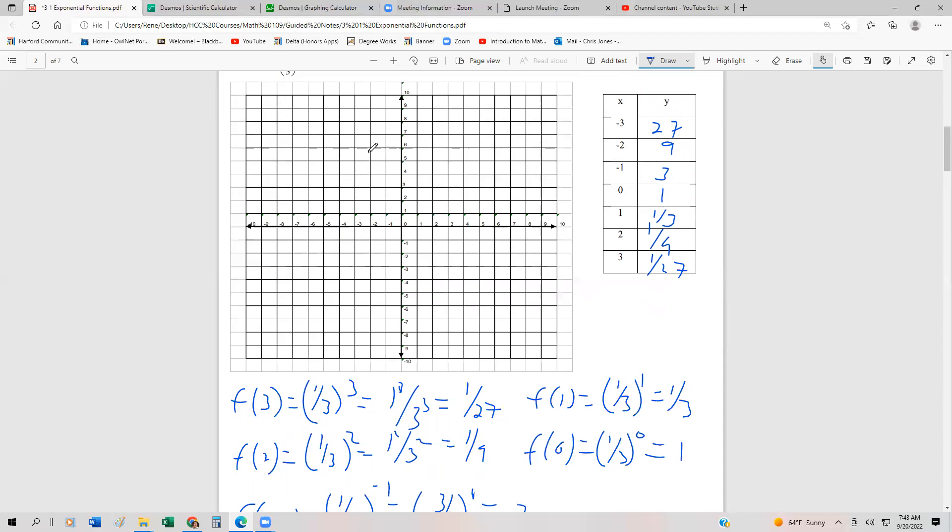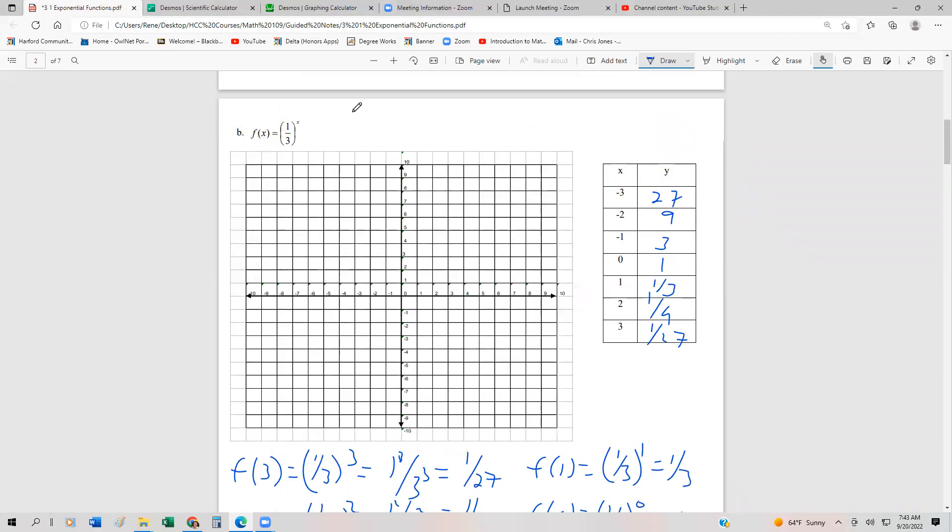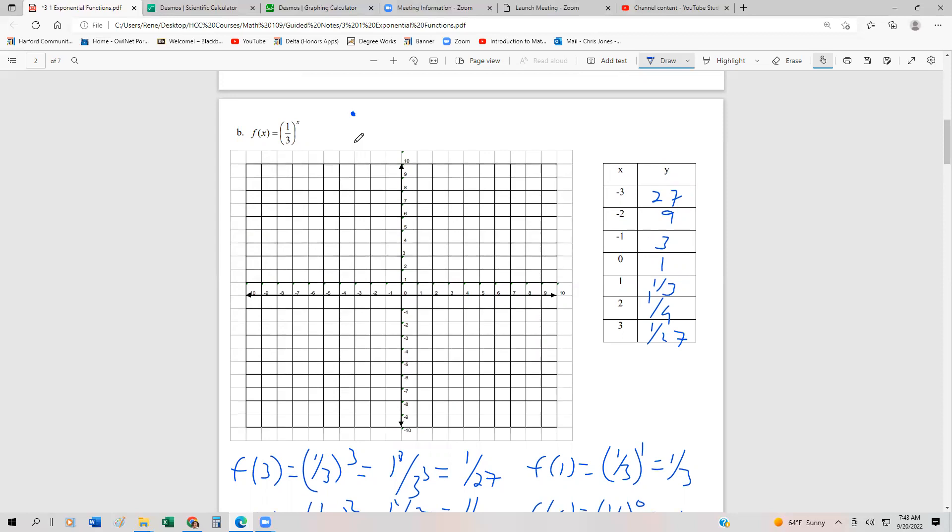So negative three, 27 is way off the charts, like somewhere up here. And I know that's not a good depiction. That's probably more like 13 or 14. But just to get the idea, I'm not even going to worry about this point, just because I can't plot it.